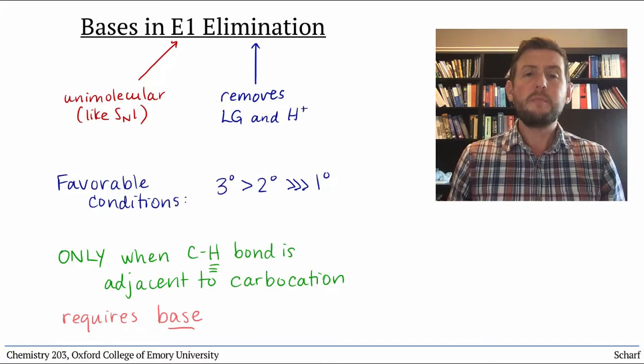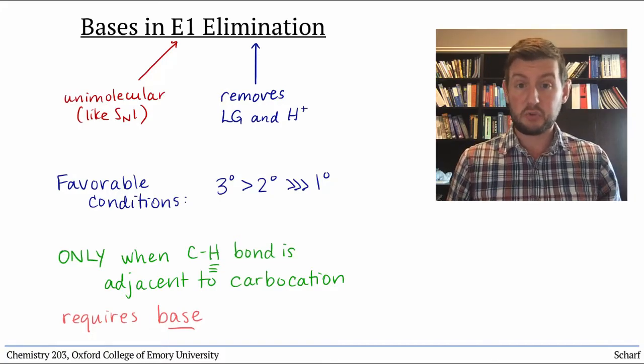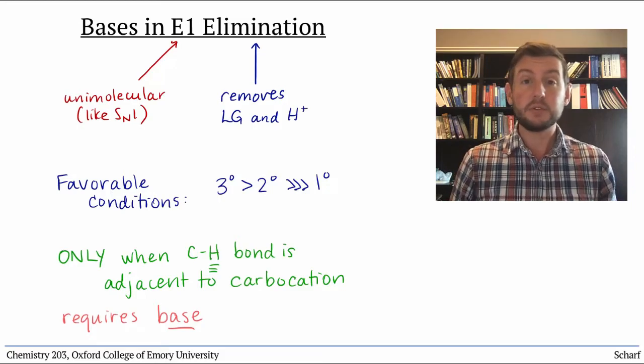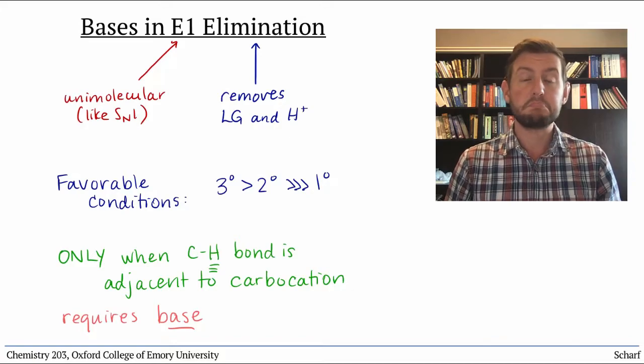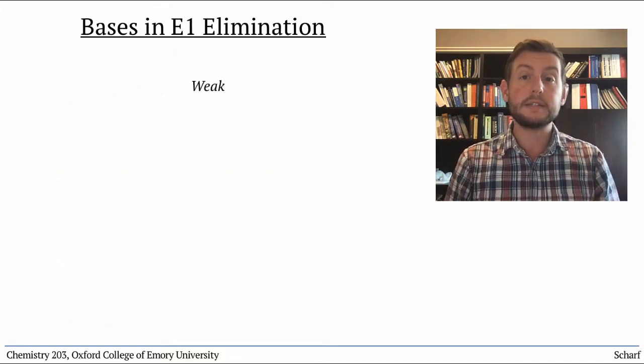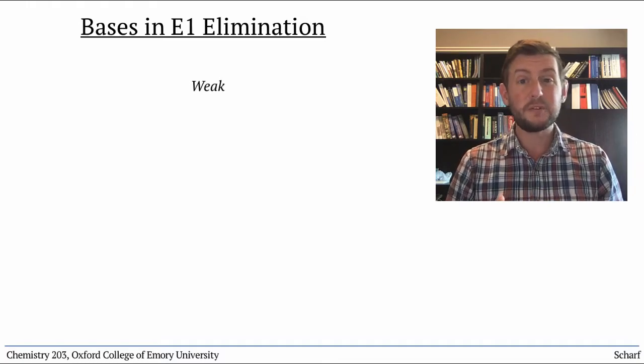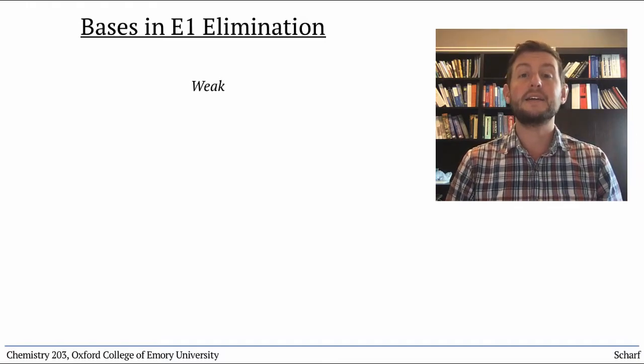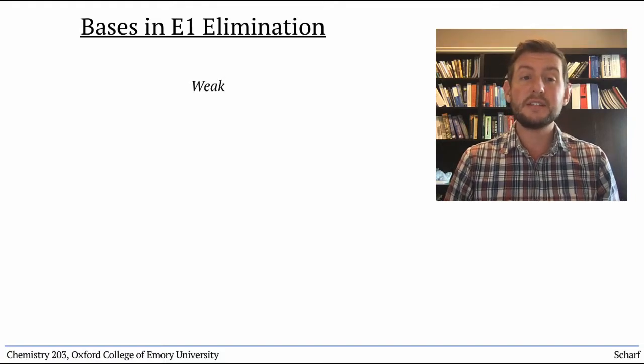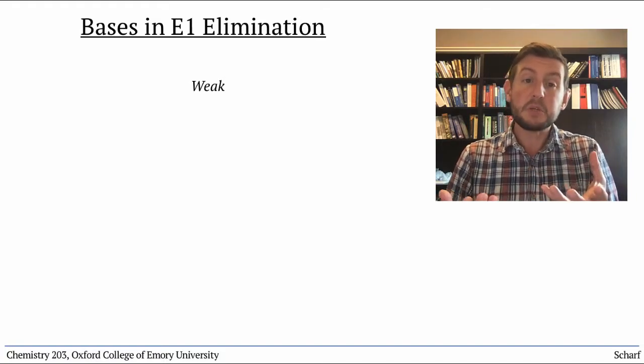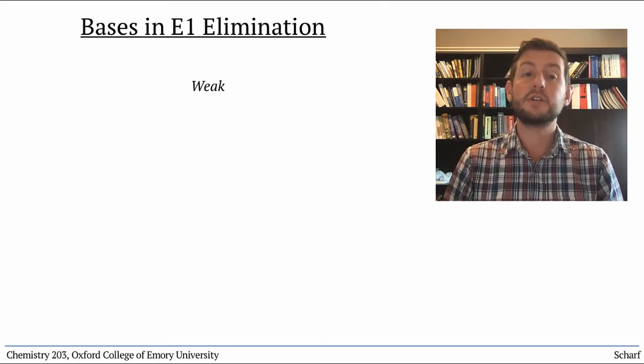So what sorts of bases participate in the E1 elimination? Certainly not strong ones. It's not possible to generate carbocations under strongly basic conditions. So they must be weak bases, and they must be bases that don't prefer to add to the carbocation directly. The sigma star C-H, that is the initial acceptor, is much more sterically accessible than the empty p orbital of a tertiary carbocation.